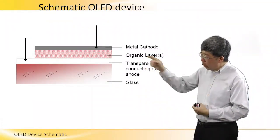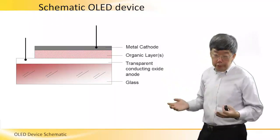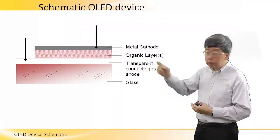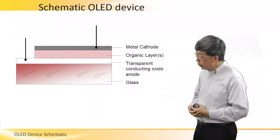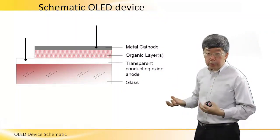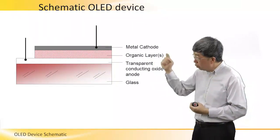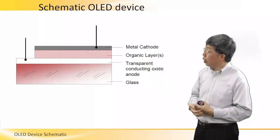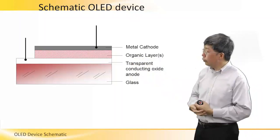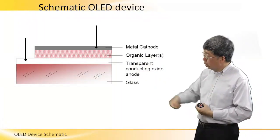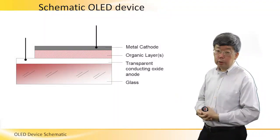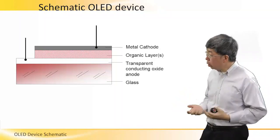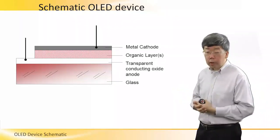If we apply an electrical bias such as a voltage between the two terminals of this device, then light will be emitted from the organic layer, and the light can escape from the device through the bottom glass substrate. That is why we can see the color of the OLED device.